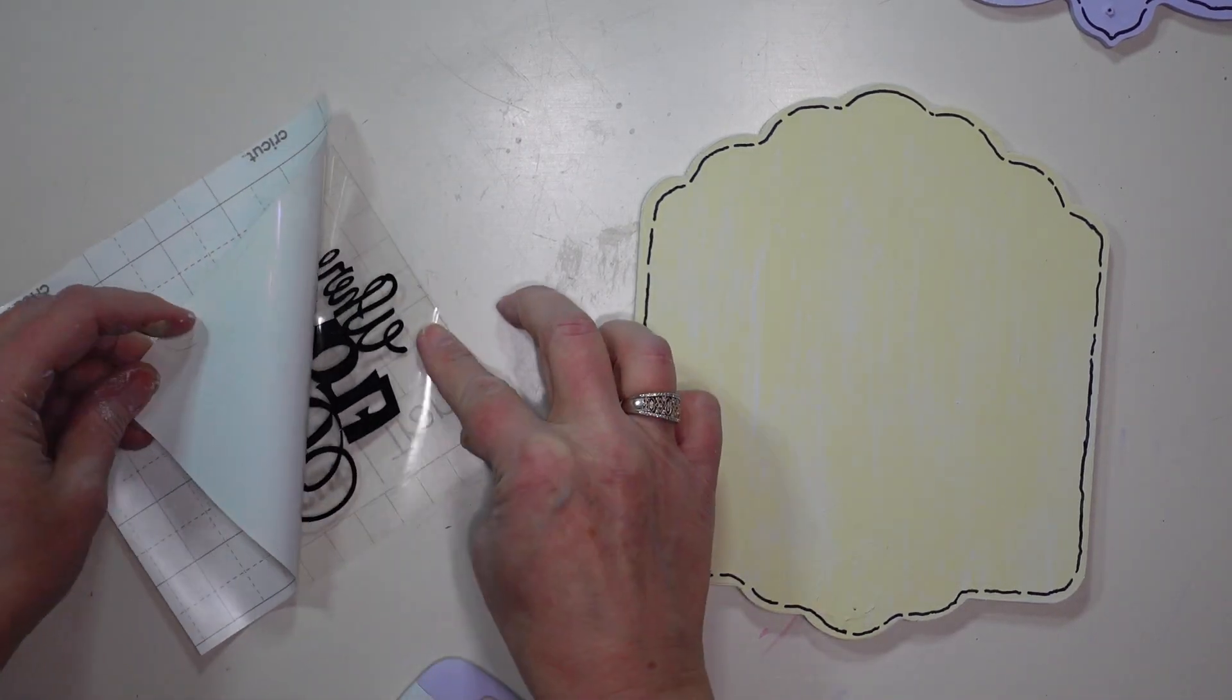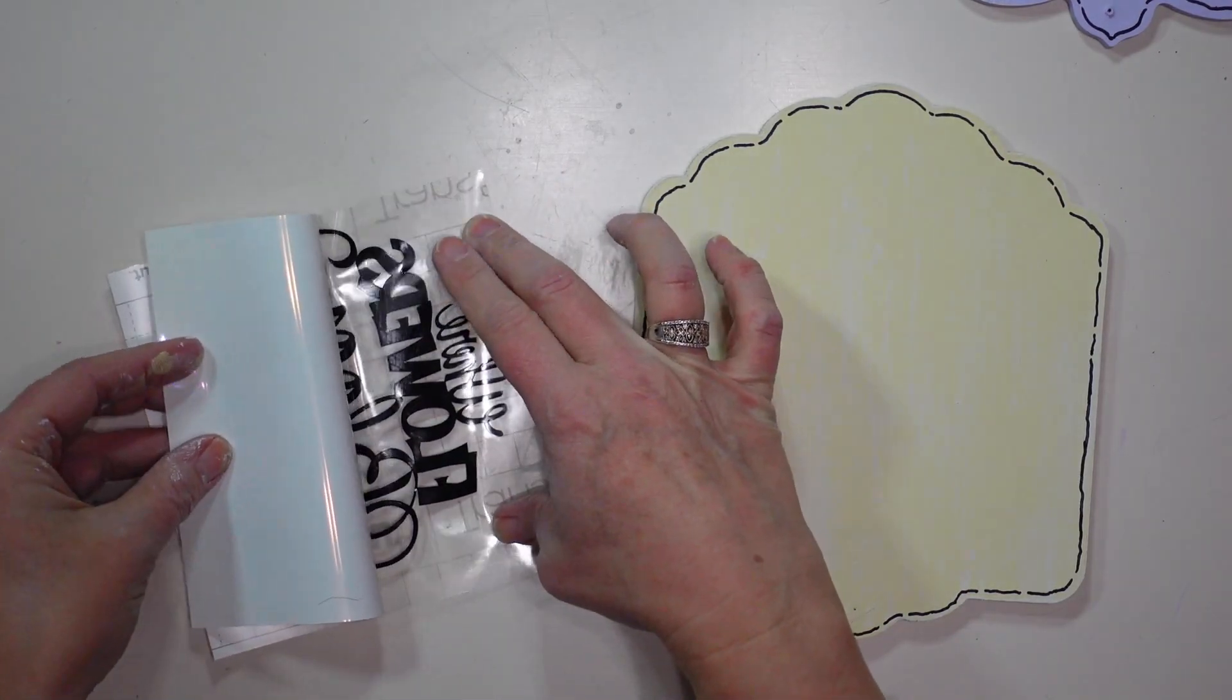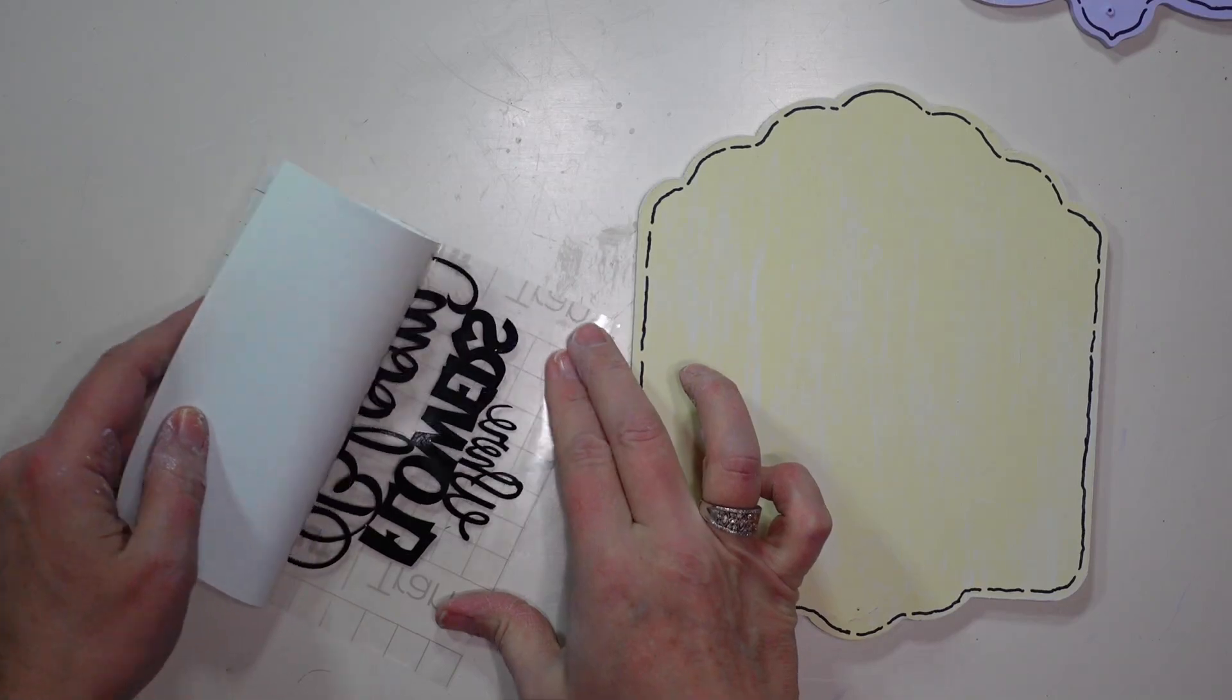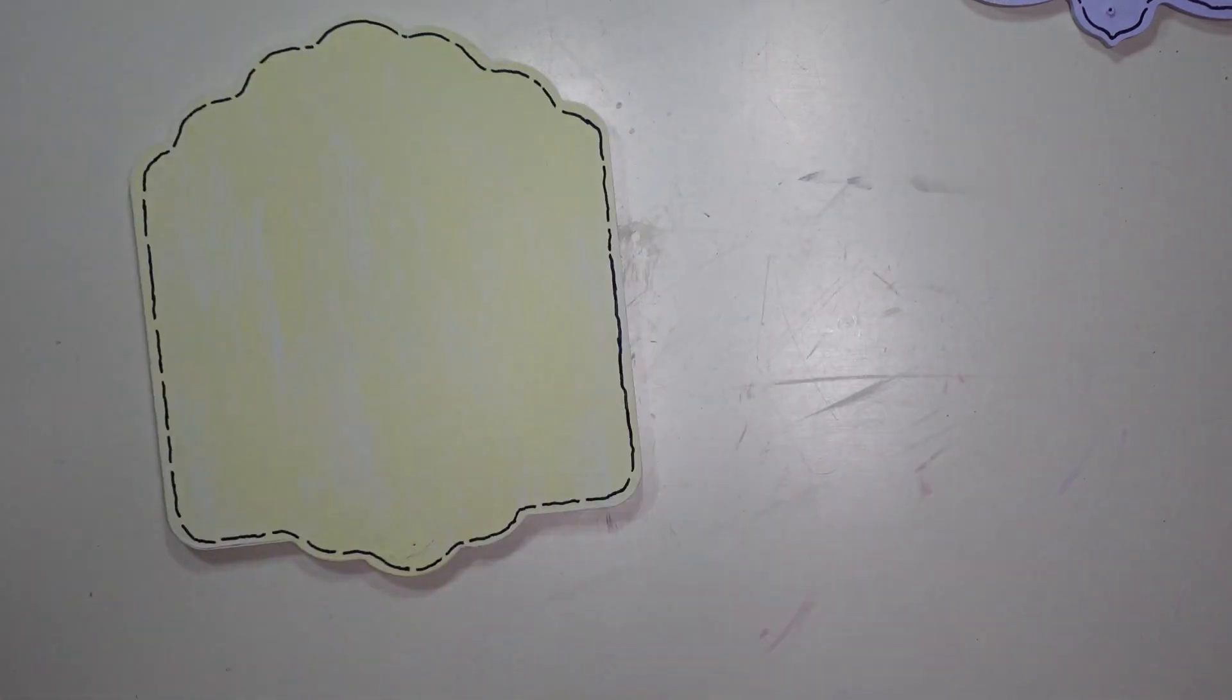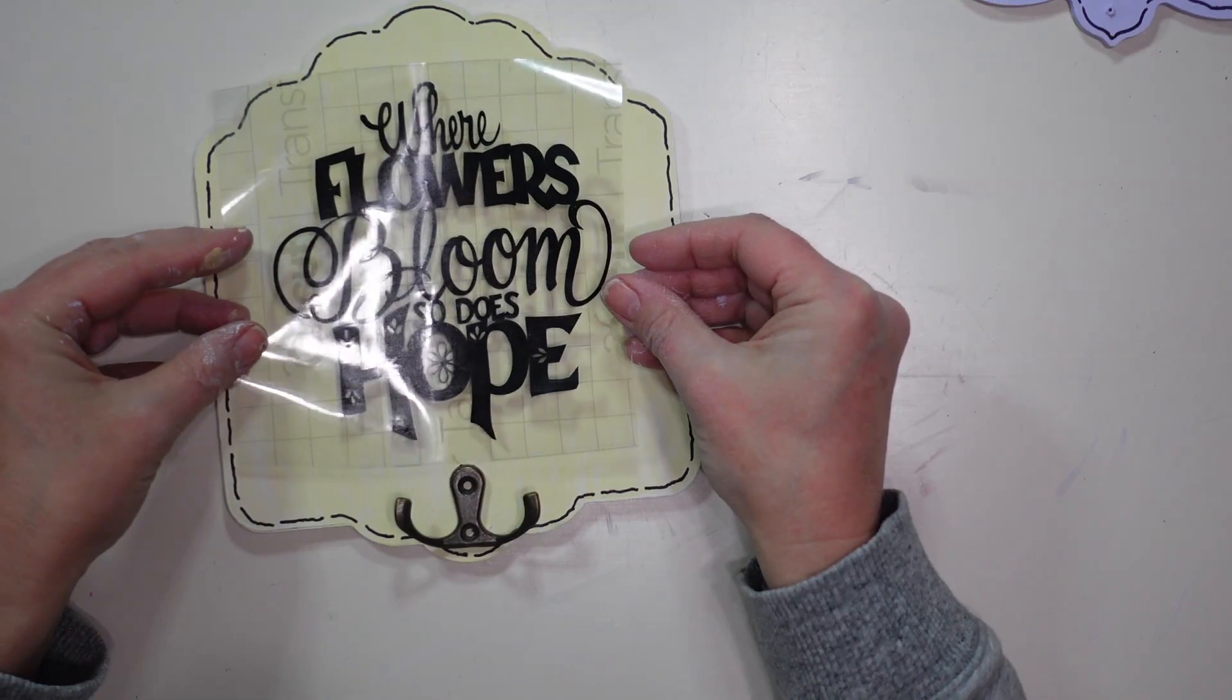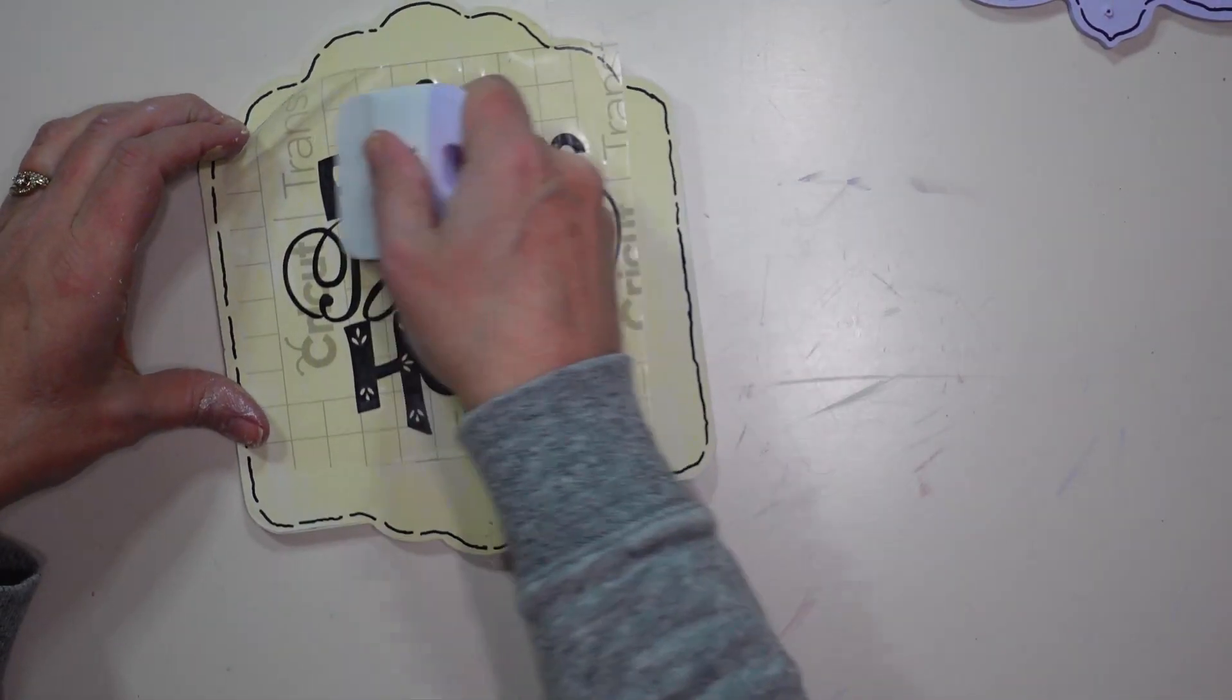To apply the design to my project I'm going to peel back the backing of the transfer tape. You may have to go over it a little bit with your tool if it doesn't want to release. Then I'm going to position my design on my sign and go over it with my burnishing tool and then peel off that top of the transfer tape and it leaves the design on my project.